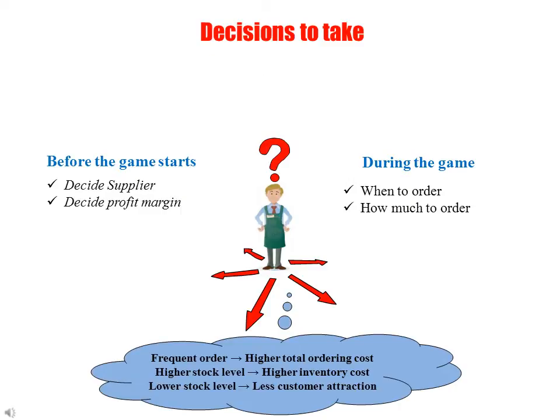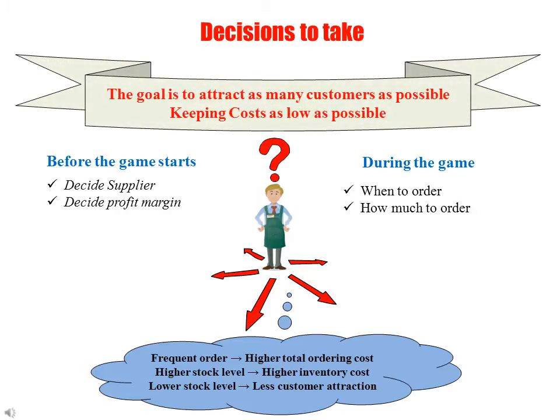In order to run the shop successfully and make a net positive profit, you as the shop player have to take some decisions, with the goal of attracting as many customers as possible while keeping costs as low as possible. The shopkeeper player needs to take some decisions before the game starts which cannot be changed during the course of the game. Before the game starts, the player needs to select one shipper from four available shippers based on the information provided.